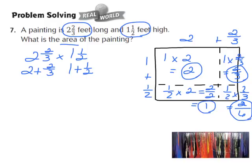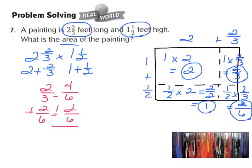Now add all areas. Starting with the fractions: 2/3 plus 2/6. Common denominator is 6. 3 times 2 gives 6, so 2 times 2 gives 4 — that's 4/6. Adding 4/6 plus 2/6 gives 6/6, which equals the whole number 1. Now adding all whole numbers: 2 plus 1 plus this 1 gives 4. So the area of the painting is 4 square feet.